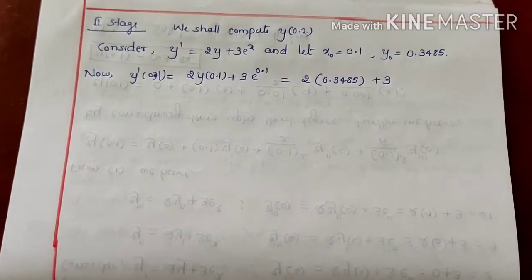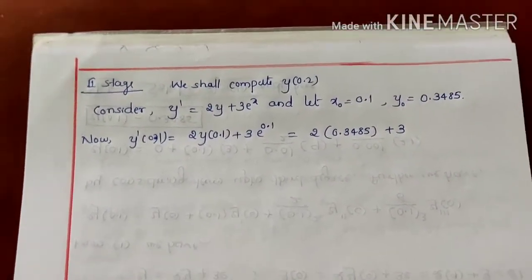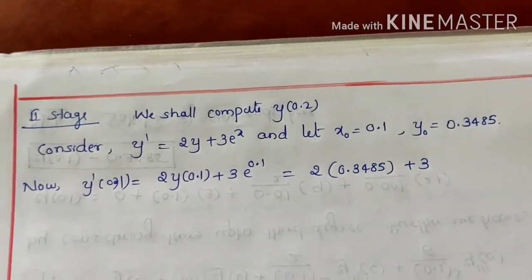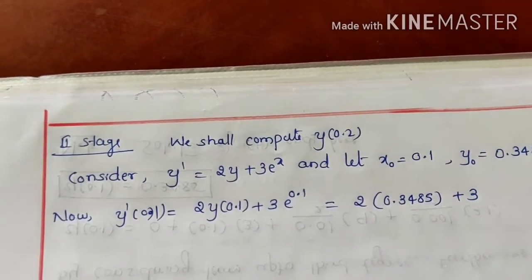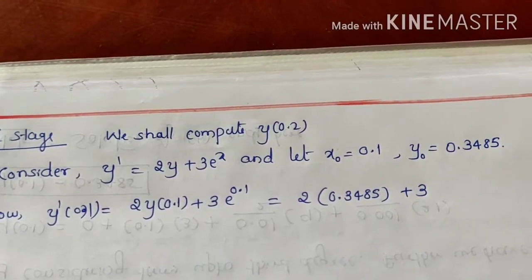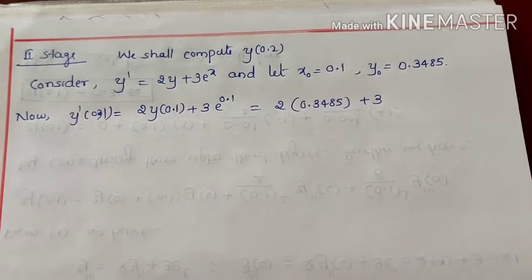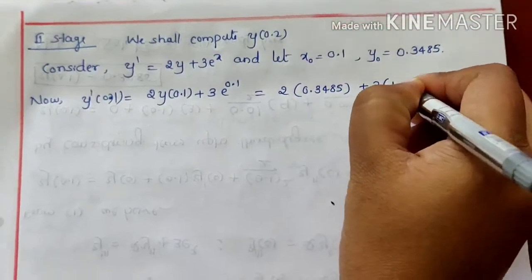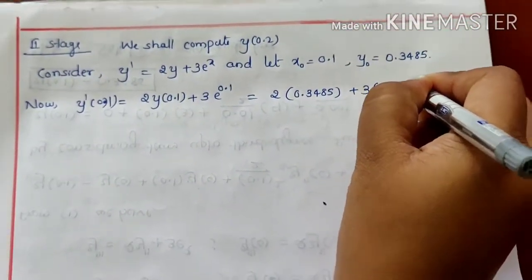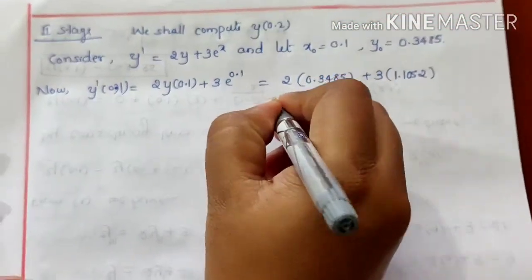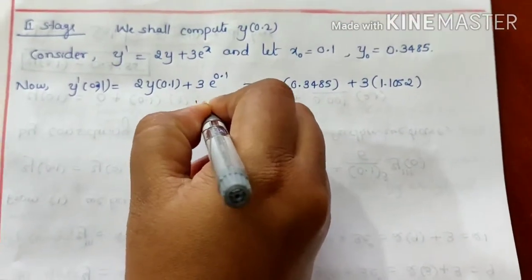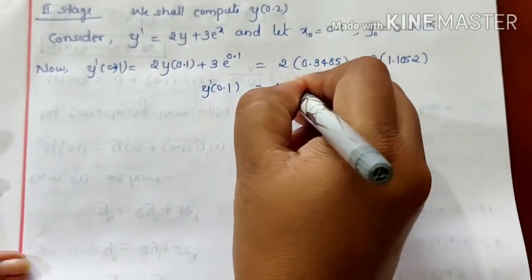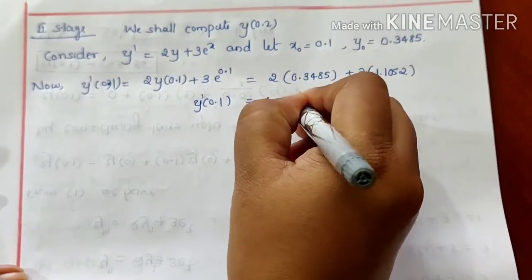e raised to 0.1 is 1.1052. When you simplify, y dash of 0.1 will be 4.0125.